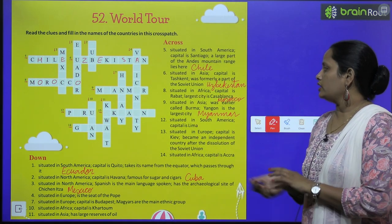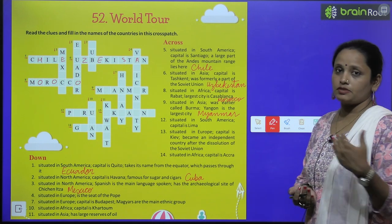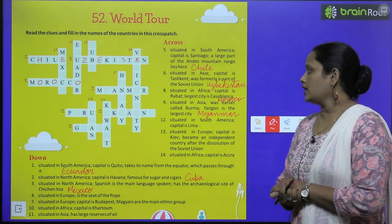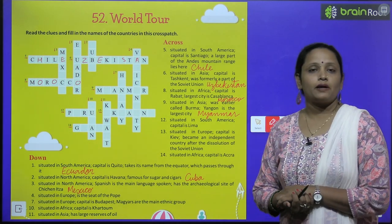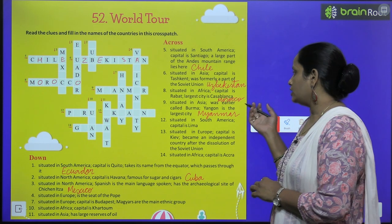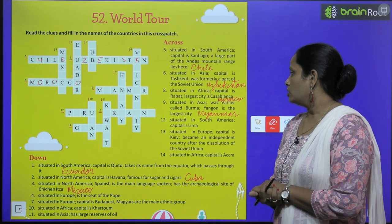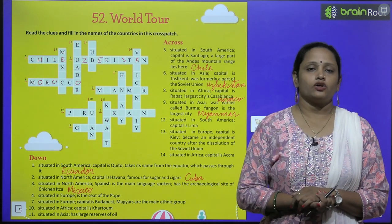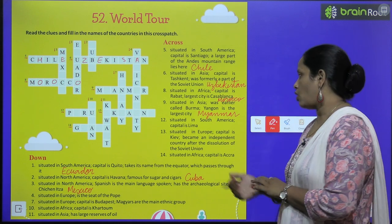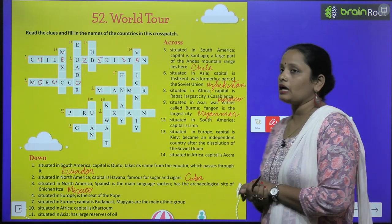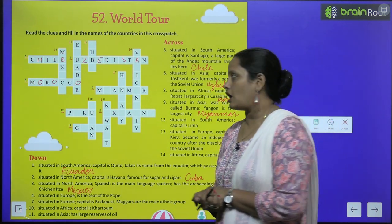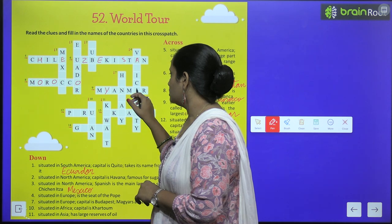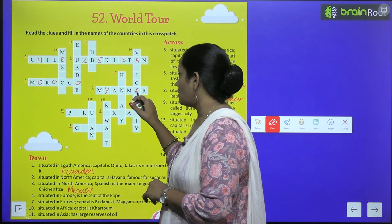Next, number nine, situated in Asia — yeh Asia mein situated hai. It was earlier called Burma — ishse pahle Burma ki naam se jana jata tha. Yangon is the largest city, and its name is Myanmar. So let's write it here — Myanmar.